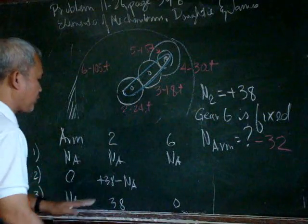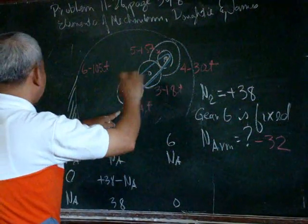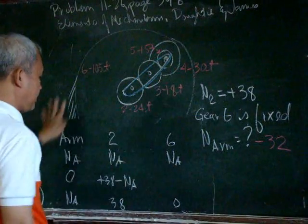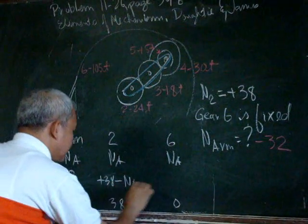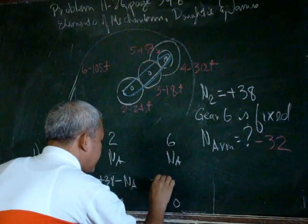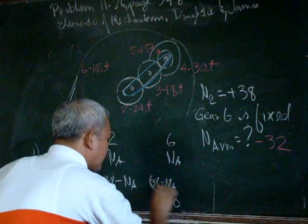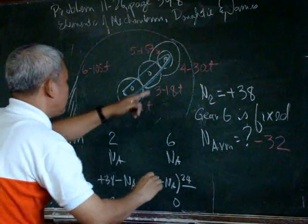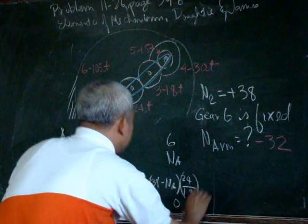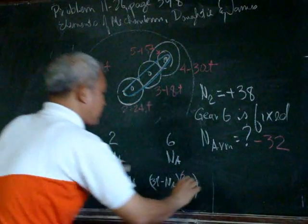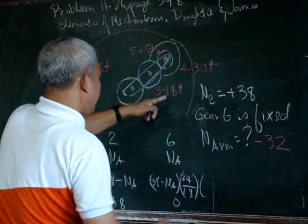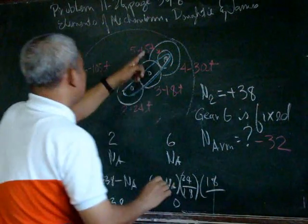So with that, we can now determine the rotation of 6. The rotation of 6 is equal to 38 minus n_a multiplied by 24 over 80 multiplied by 18 over 15.